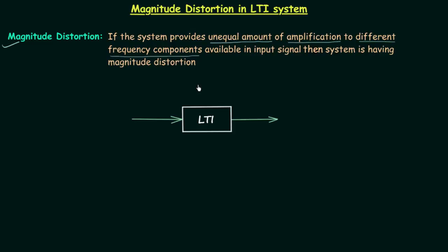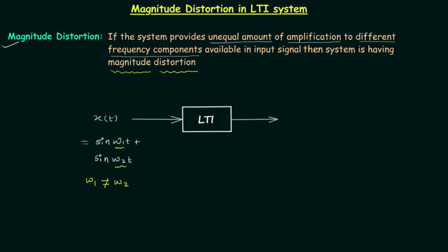To understand this, let's take one LTI system where x(t) is the input, which is equal to sin(w1·t) + sin(w2·t). The input has different frequency components: the frequency of the first component is w1 and the frequency of the second component is w2, where w1 is not equal to w2. As we are considering the case of magnitude distortion, the output of the LTI system will have these different frequency components with different amplitudes.